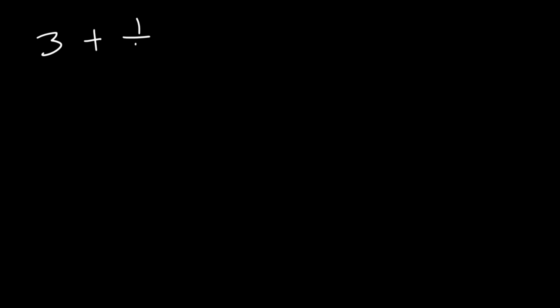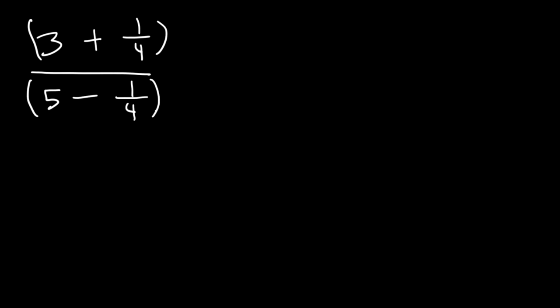How can we simplify this complex fraction: 3 plus 1/4 divided by 5 minus 1/4? Whenever you have a complex rational expression, what you want to do is clear away the fractions within the larger fraction. You can do that by multiplying by the denominator of the smaller fractions, which in this case is 4.